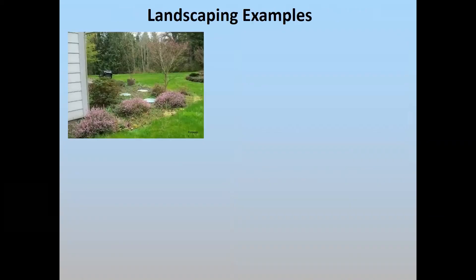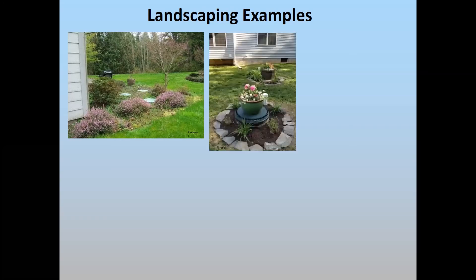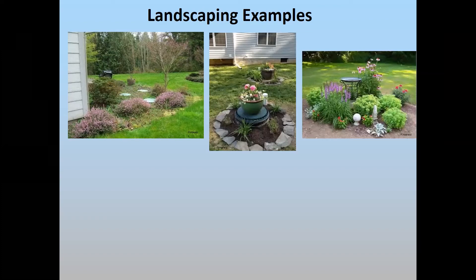Here are a couple of examples from the web. This BAT unit with several access ports near the house has simply had various types of landscaping plants added to provide some aesthetic value. Another more simplified example uses flower pots on top of the access ports with a little stone and some other plantings, just to break it up. In another case, a birdbath sits on top of the access port with other plantings and decorations around it.